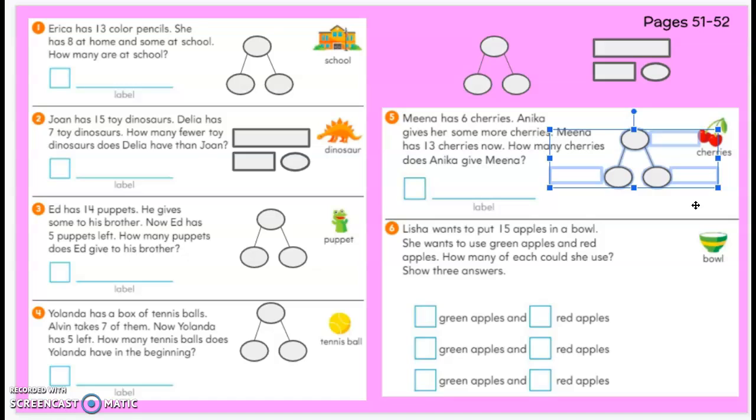So now we need to figure out where these numbers belong. What part is the total and what are the addends? Mina has six cherries. Annika gives her some more. Mina has 13 cherries now. So think about where those numbers should be in your math mountain. Pause if you need to, to figure it out on your own. And then check. You could always work on a whiteboard first too.